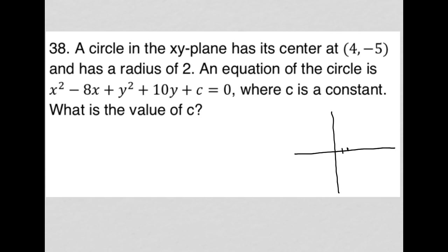Counting out to 4 on the x-axis and down to -5 on the y-axis — I like to label my graph. So there's the center of my circle. The radius is 2, so it goes up 2, down 2 to -7, this will be -3 on the top, left 2 to positive 2, and right 2 to 6. So my circle looks something like this.